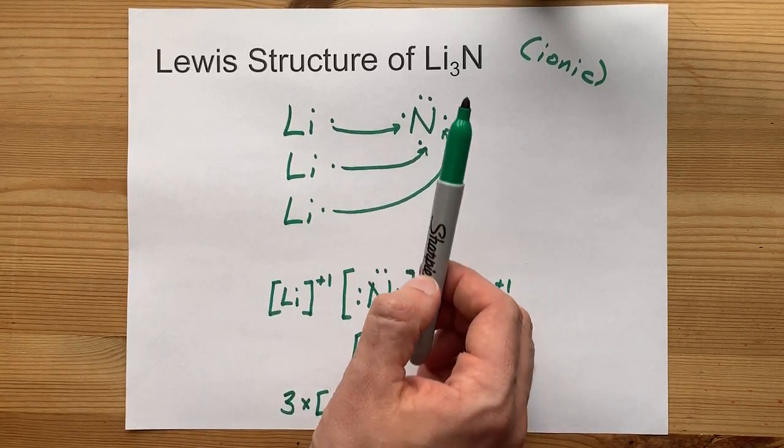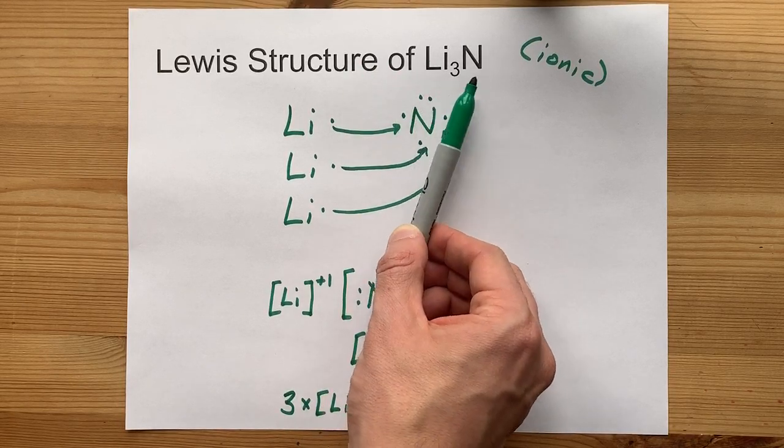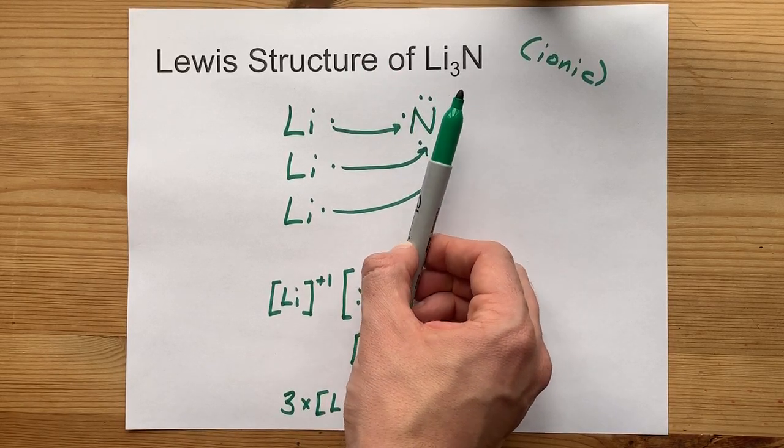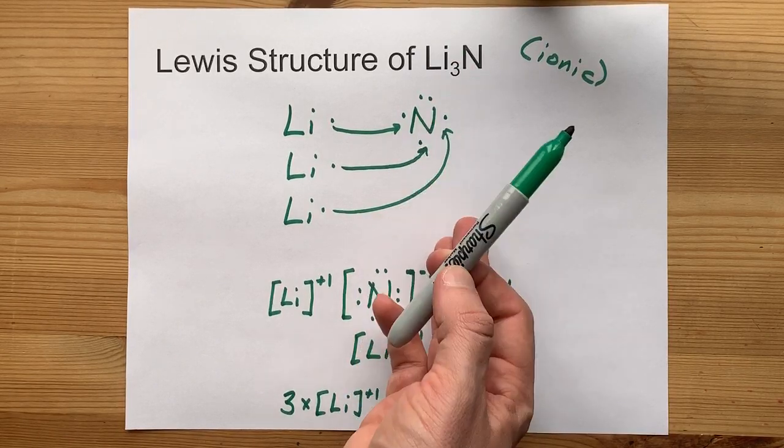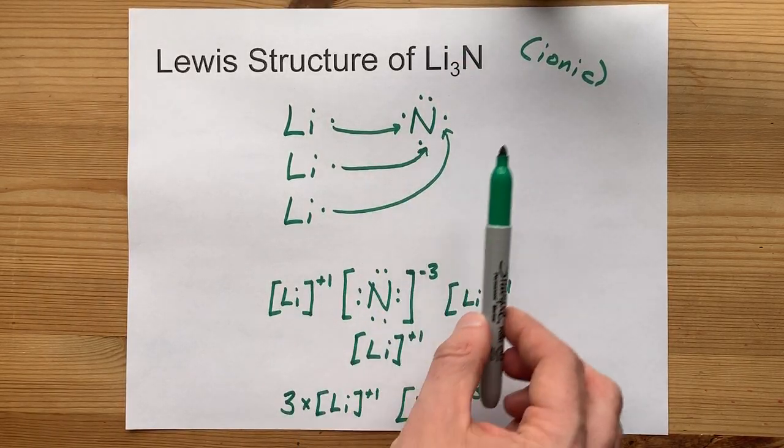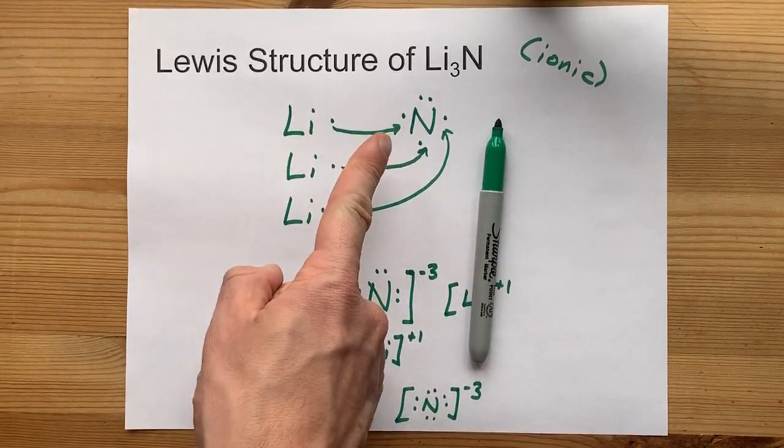Speaking of which, the formula for lithium nitride is Li three N, which tells me you need three lithiums to bond with a single nitrogen. It's what the formula says, and it's true. Best of luck to you.